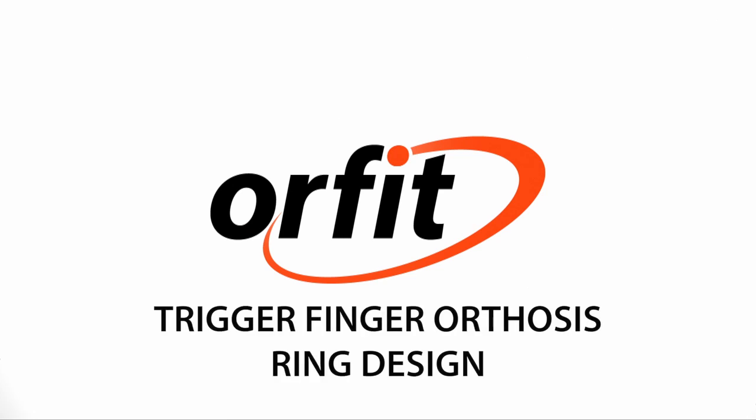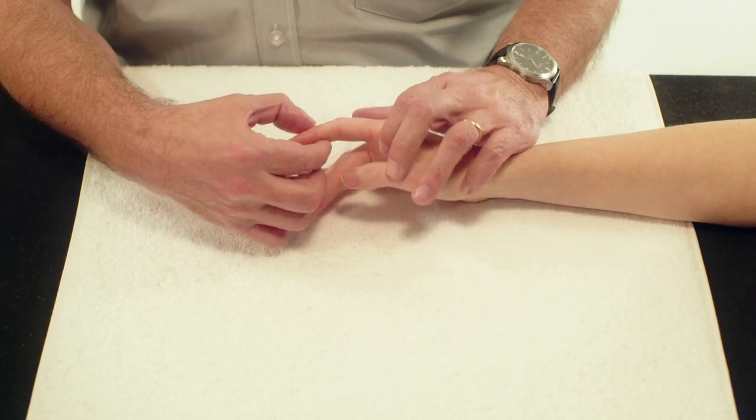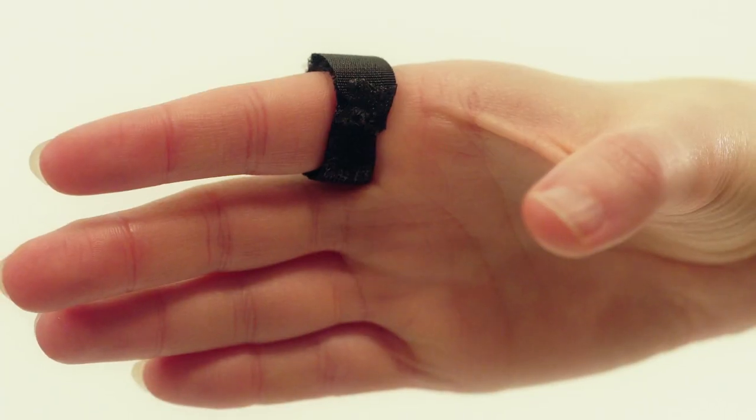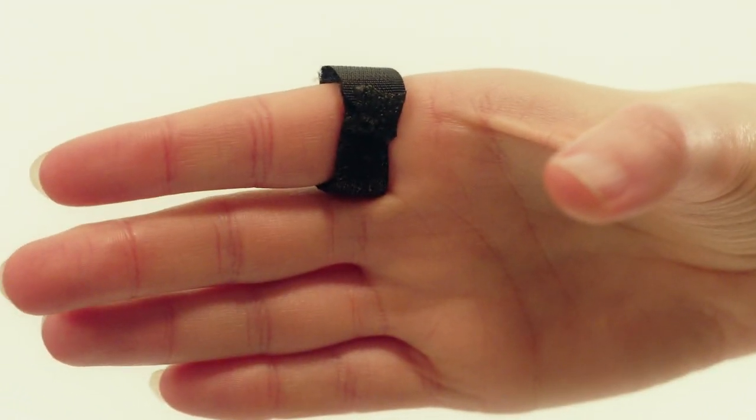Trigger finger orthosis ring design. Here we will demonstrate how to make a trigger finger orthosis. This design consists of a small ring fabricated around the base of the involved finger. It can also be used